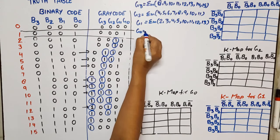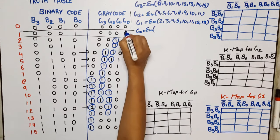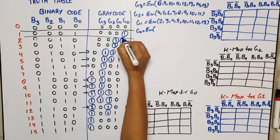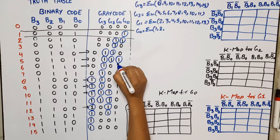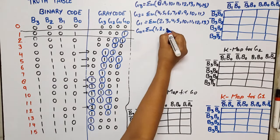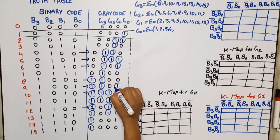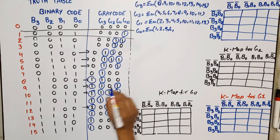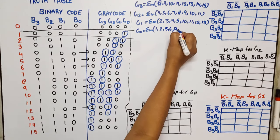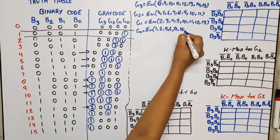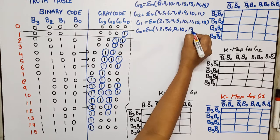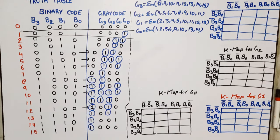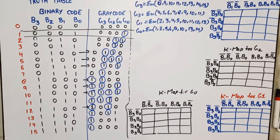For G0, the minterm expression is: G0 = Σm(1, 2, 5, 6, 9, 10, 13, 14). Now we have all four Boolean minterm expressions. We'll use K-maps to find the simplified expressions for each output.